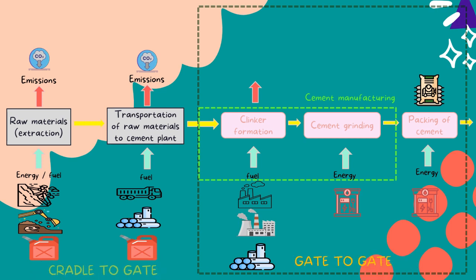Next is the stage of gate to gate. When the raw materials arrive at the cement plant, they go through the process of clinker formation to form small pieces of limestone mixed with other materials. After it is mixed well, it goes to cement grinding to confirm all the mixture meets the required standard. This process happens in cement manufacturing. It then arrives at the packing of cement to be distributed to consumers. Throughout this process, fuel and energy play a big role in operating all equipment, and emissions may occur during this stage.